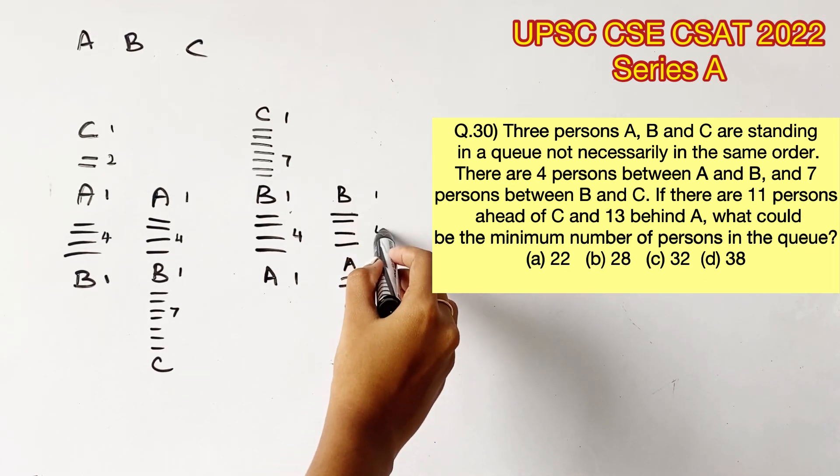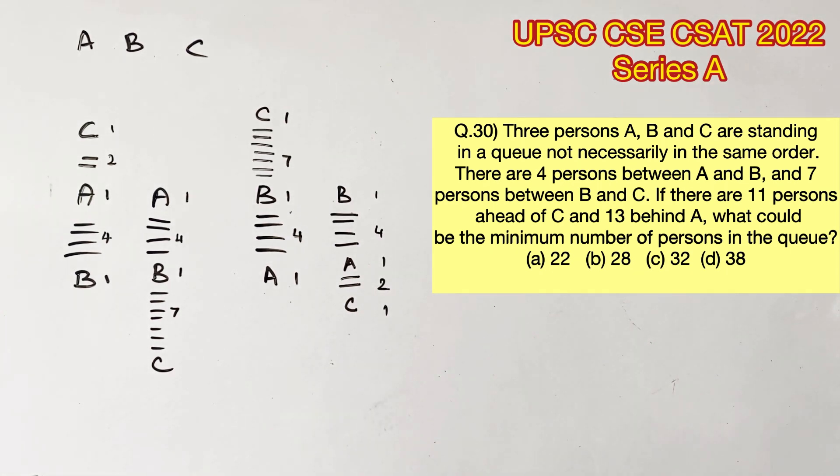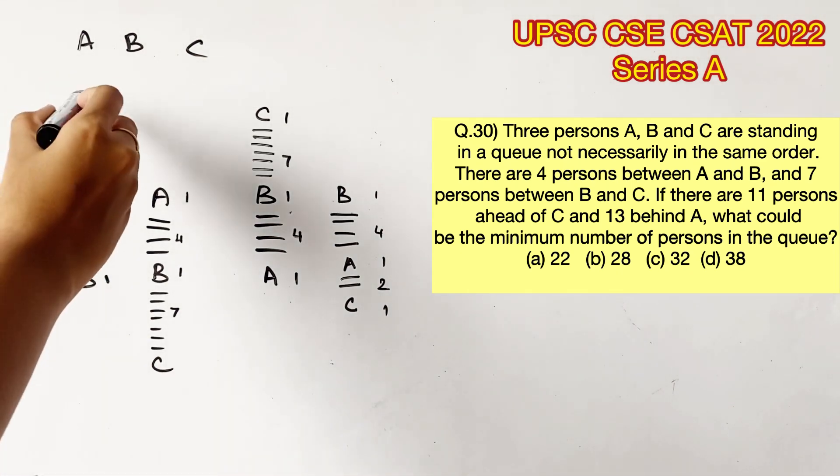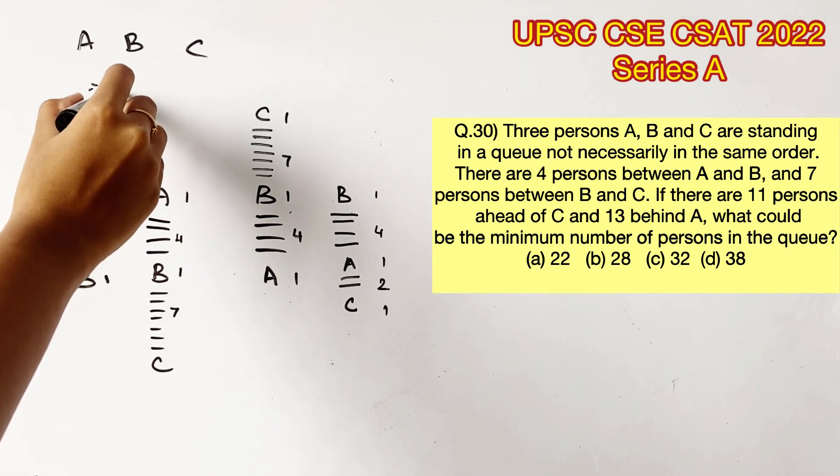Now we have 2 more statements. If there are 11 persons ahead of C and 13 behind A, what could be the minimum number of persons in the queue? So we will have to mark 11 people ahead of C now. In the first possibility it will be right here. So we are marking 11 here.